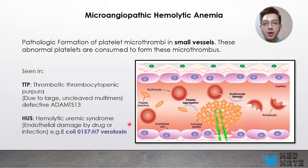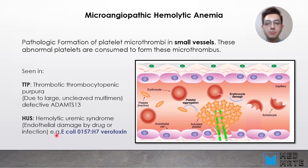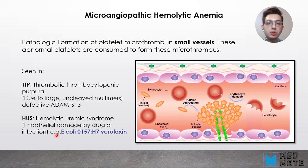The other form is HUS — hemolytic uremic syndrome — which is related to endothelial damage caused by drugs or infection. It can occur with infection by E. coli O157:H7, whose verotoxin damages the endothelial surface, causing HUS. This can happen to children who have consumed undercooked meat, for example.